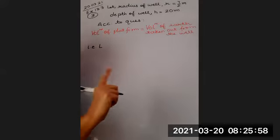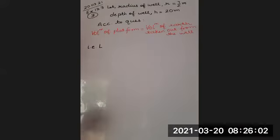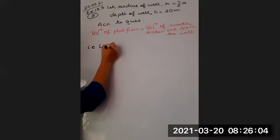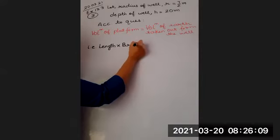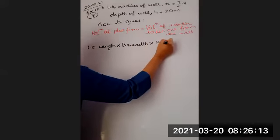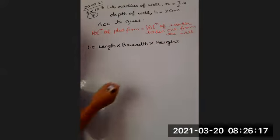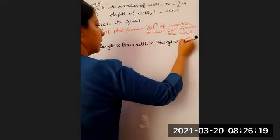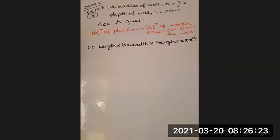What is the volume of platform children? We are not going to put LBH because we have not defined LBH anywhere, so we are going to use a complete term. Unless we define variables we do not use them. So we shall be writing length into breadth into height is equal to - what is the volume of well? Pi r square h.